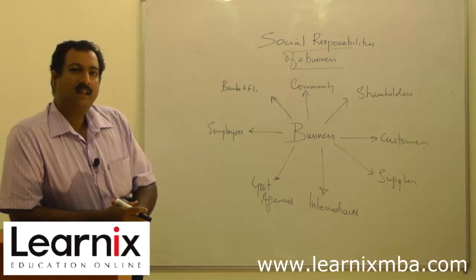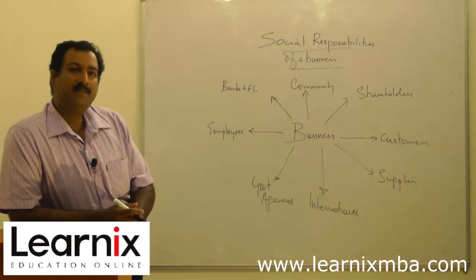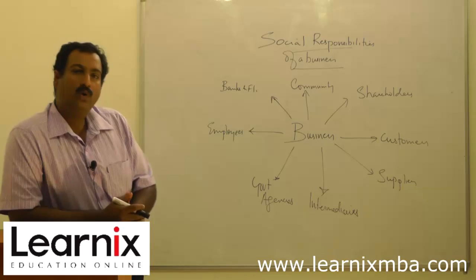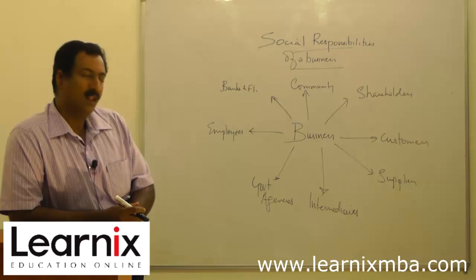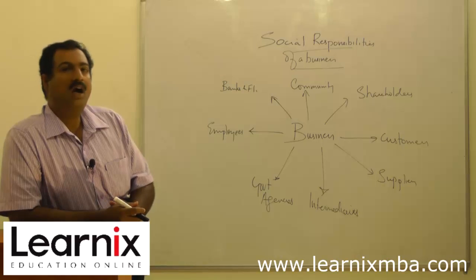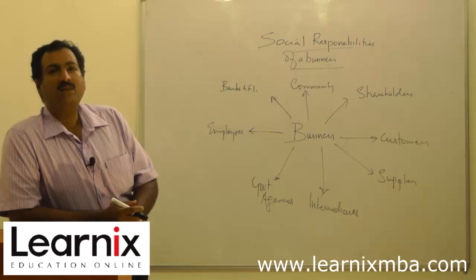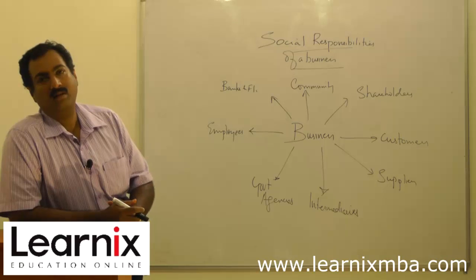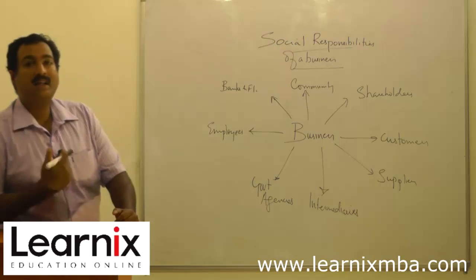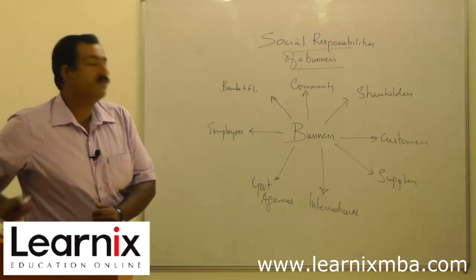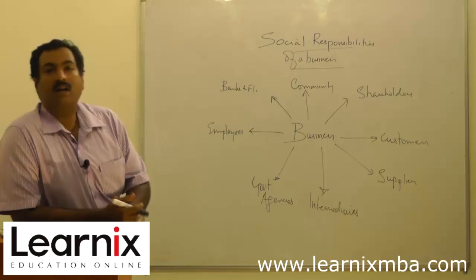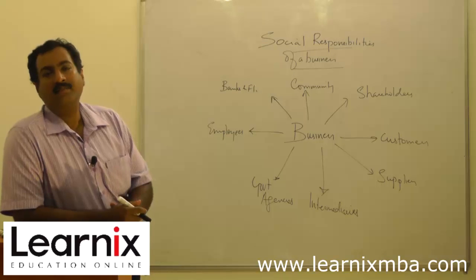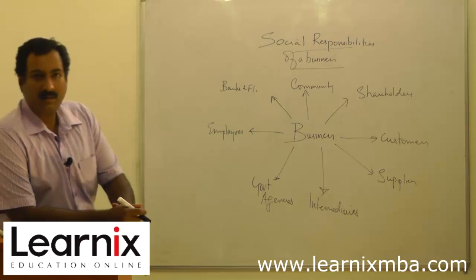The next responsibility is towards government agencies. Every business or organization has to obey certain rules and regulations and follow governmental regulations. Government agencies monitor and control the firm, and they must be satisfied. The business has a responsibility by way of payment of taxes, payment of other tariffs, and obedience to rules and regulations — all of which demonstrate the business's responsibility towards government agencies.